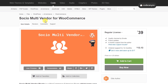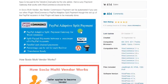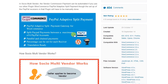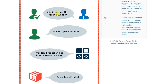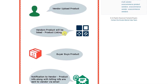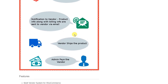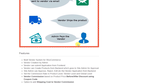Another multi-vendor plugin is WCFM — the WCFM multi-vendor for WooCommerce — which you can use to build a multi-vendor e-commerce website. The workflow is straightforward: a seller applies to become a vendor, the admin accepts the application, the vendor uploads products which get listed, a buyer purchases a product, a notification goes to the vendor, and the vendor ships the product.